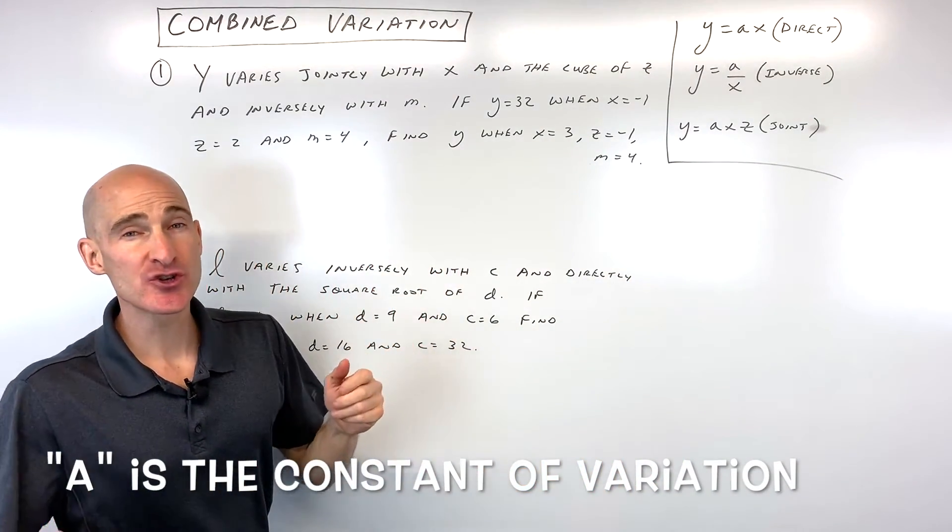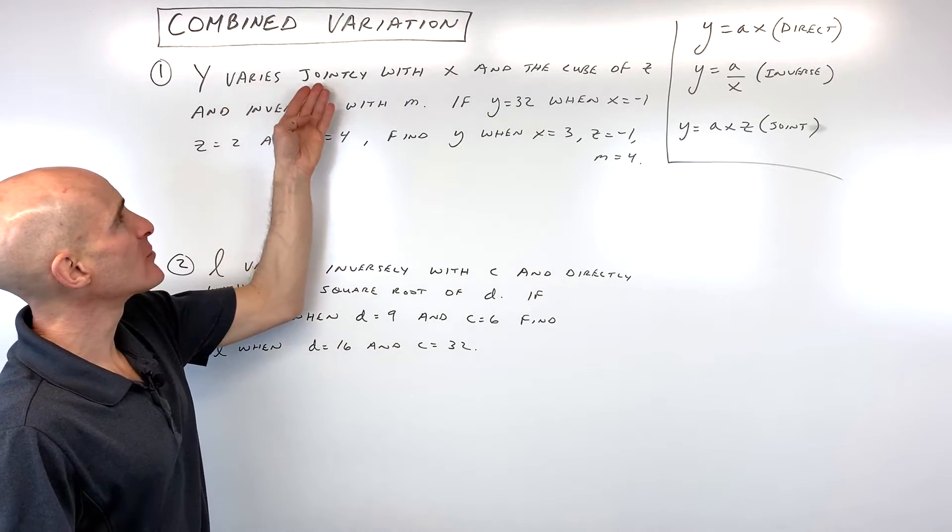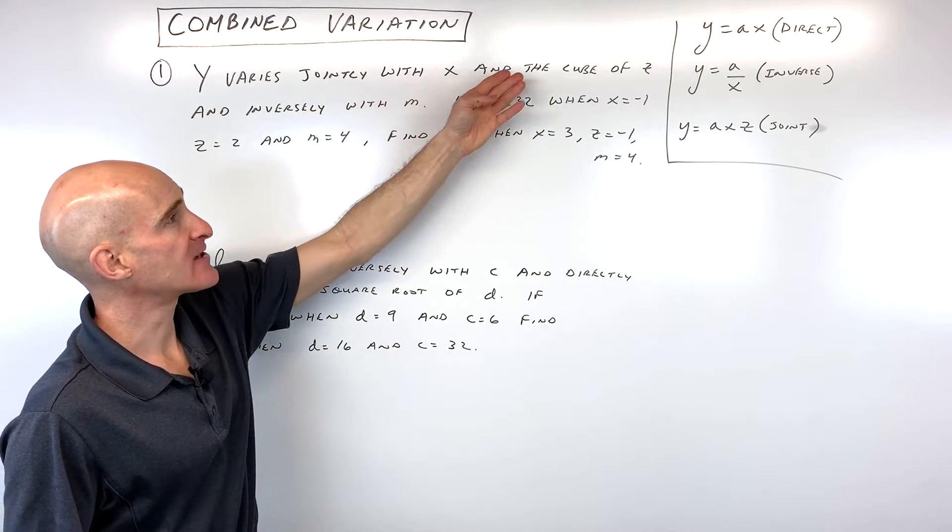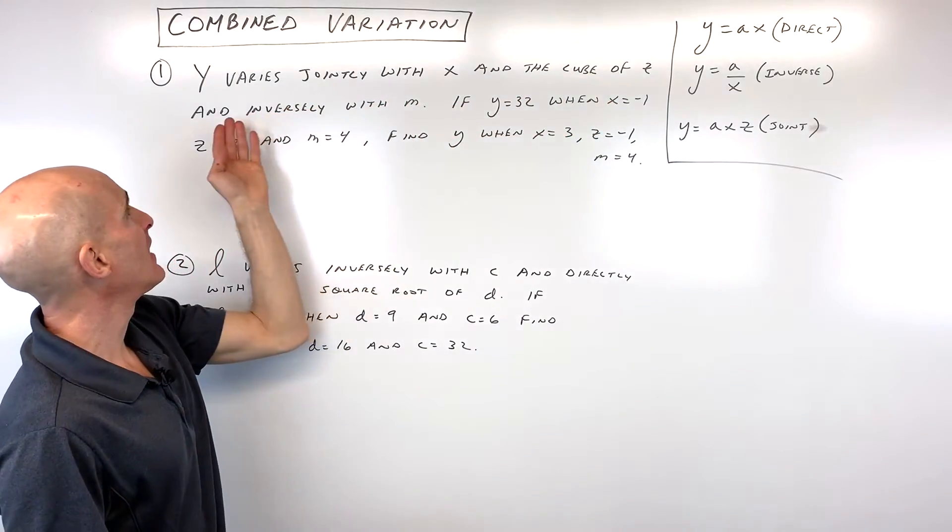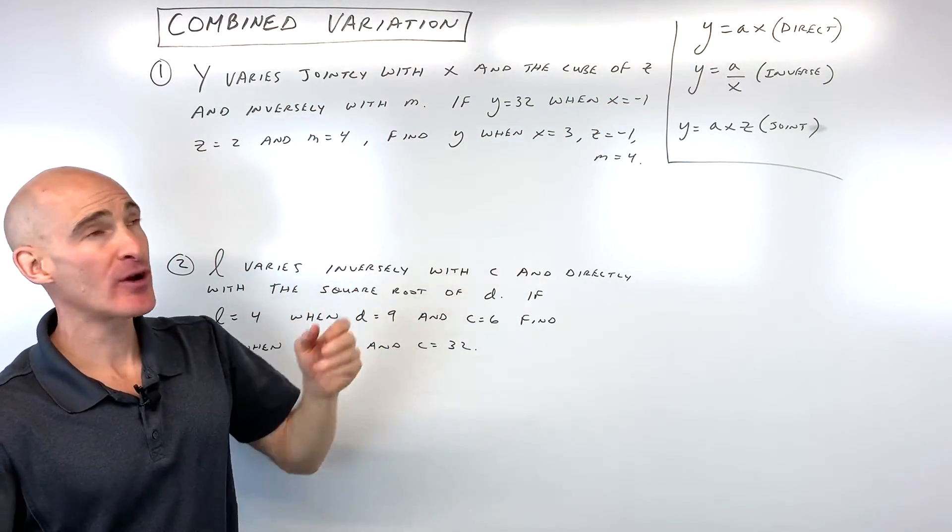So let's go through two examples. I'll show you how to work with this. So the first one, it says y varies jointly with x and the cube of z and inversely with m. Okay, let's just stop right there.